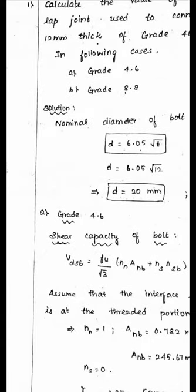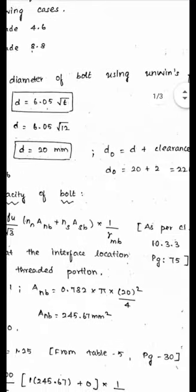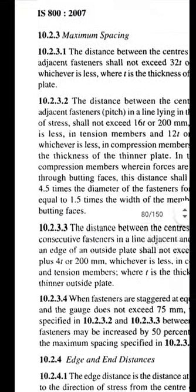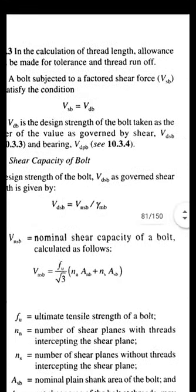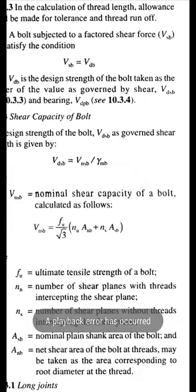First, we calculate for the grade 4.6 bolts. The shear capacity of the bolt is V_DSP = V_NSP / γ_mp. This formula is from Clause 10.3.3, page 75. Writing it directly: V_DSP = (f_u / √3) × (n_n × A_nb + n_s × A_sb) × (1 / γ_mp), where f_u is the ultimate tensile strength of the bolt. For grade 4.6, f_u = 400 MPa. For grade 8.8, f_u = 800 MPa (first digit × 100).